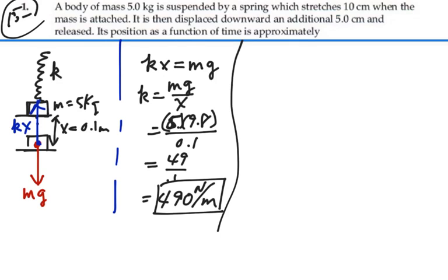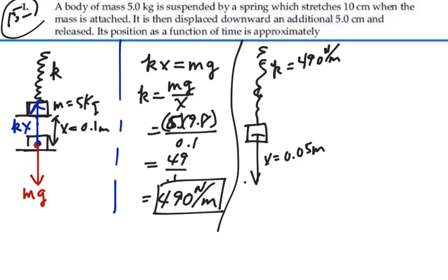Now, the way things look now is we have a spring. It's stretched, but it's reached a new equilibrium position, and the k constant, of course, is now 490 newtons per meter. Now, we're told that we stretched an additional 5 centimeters from this point, so we're going to go down 5 centimeters, 0.05 meters, to a new point, and then we're going to let go.